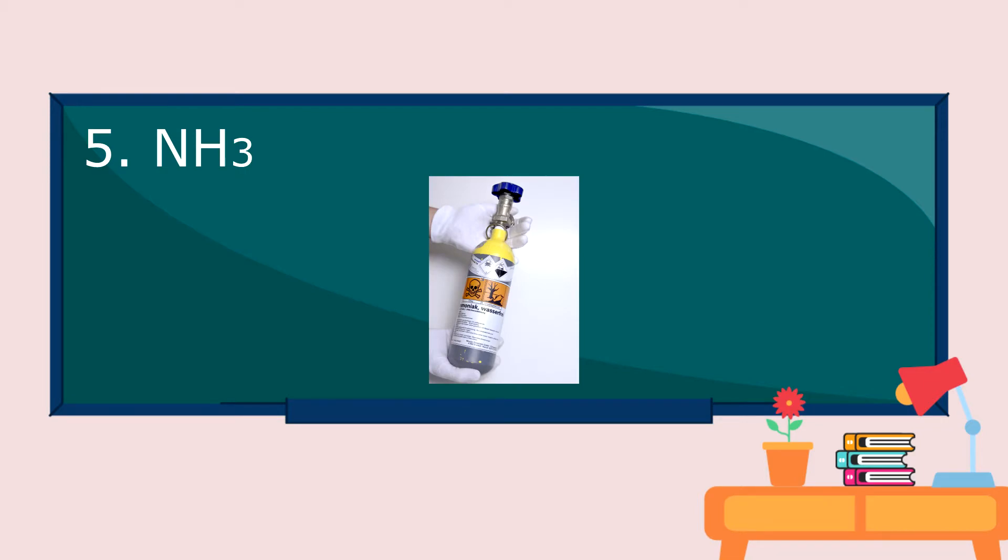How about this one? This is nitrogen trihydride. It is commonly called as ammonia. It is composed of two elements: nitrogen and hydrogen. This is a compound. So, it has fixed property. And it is a pure substance.